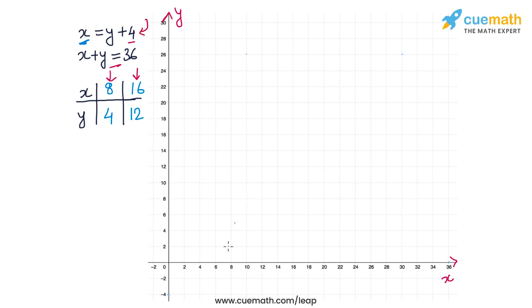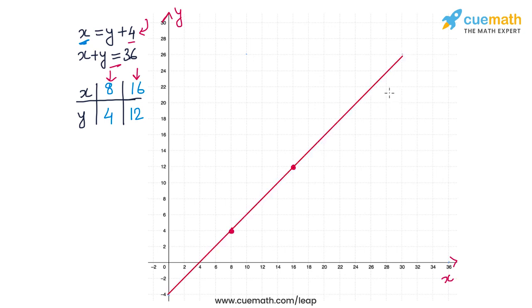Let's plot those points. (8, 4) is here and (16, 12) is here. Drawing the line through these two points gives us the solution line for the first equation x = y + 4.